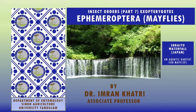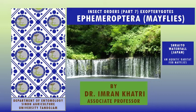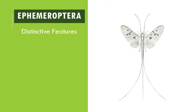Hello students, Assalamu Alaikum. This is Dr. Imran Khatri, Associate Professor, Department of Entomology, Agriculture University Tando Jam. Today our topic, under the series of insect orders, is Ephemeroptera — mayflies. Mayflies are hemimetabolous insects, meaning they have incomplete metamorphosis. Ephemeroptera is derived from 'ephemeros,' meaning living a day, and 'teron,' meaning wings, referring to the adult that lives only for 24 hours.